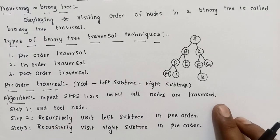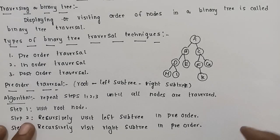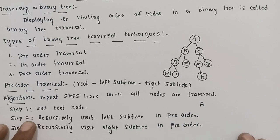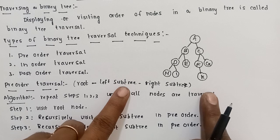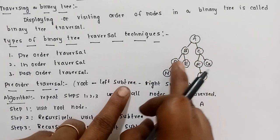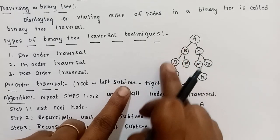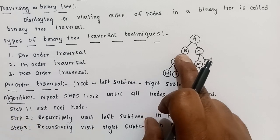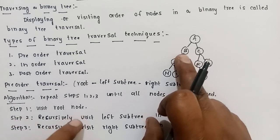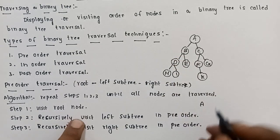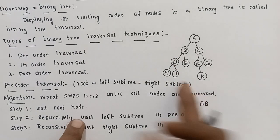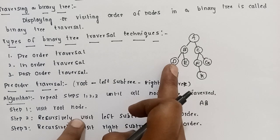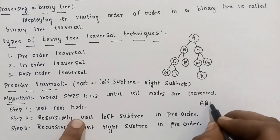For example, in pre-order traversal, the first root node is visited and displayed. Then we move to the left subtree. The root of the left subtree is B, so B is traversed. Then from B, we go to the left subtree, where the node is D. So D is visited next.